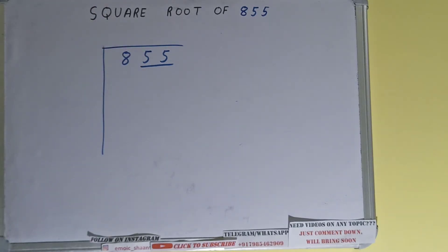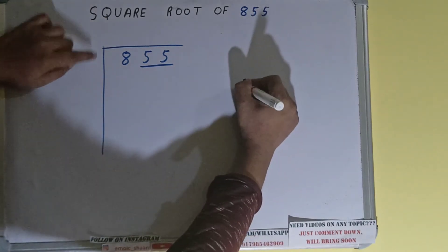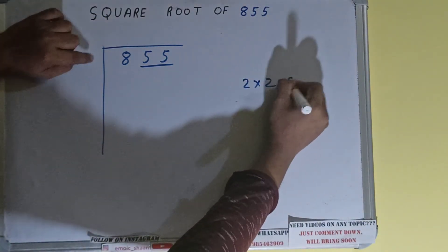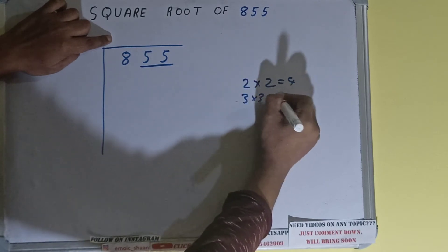The rule is whatever number we write here you have to write here also. So if we write 2 here and 2 here it will be 4. If we write 3 here and 3 here it will be 9.